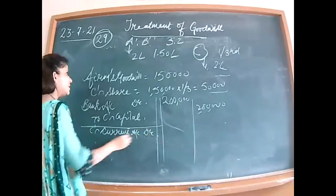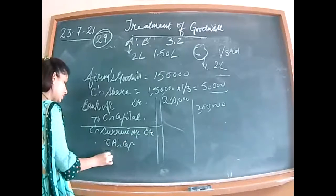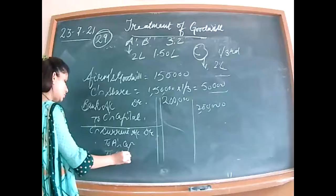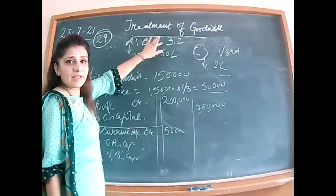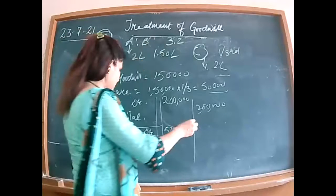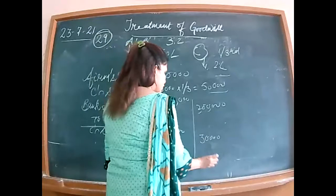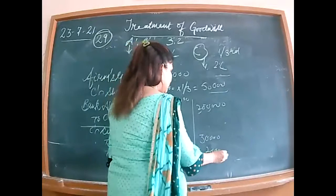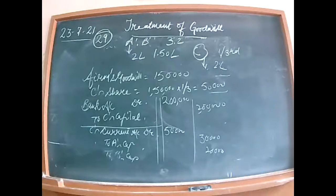Entry: C's current account debited to A's capital and B's capital. C's share of goodwill is 50,000. Sacrificing ratio equals old ratio, so 30,000 to A and 20,000 to B. Being sacrificing partners credited in their sacrificing ratio of 3 is to 2. Same entries as before — the pattern is consistent.